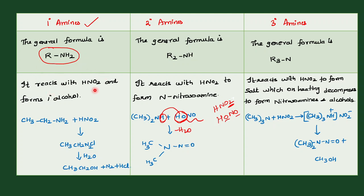To summarize: primary amine reacts with HNO2 to form primary alcohol; secondary amine reacts with HNO2 to form N-nitrosamine; tertiary amine reacts with HNO2 to form a salt.